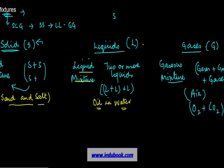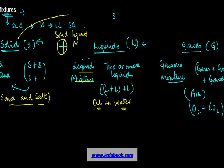When two or more of only one form combine, those are the same-phase mixtures. But there are other combinations too. When a solid and a liquid form a mixture, it is known as a solid-liquid mixture. When a solid interacts with a gas, it is called a solid-gas mixture. When a liquid interacts with a gas, it becomes a liquid-gas mixture.